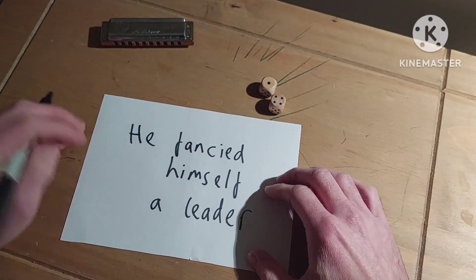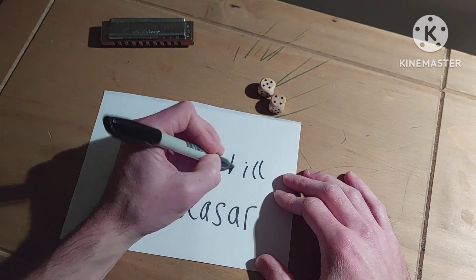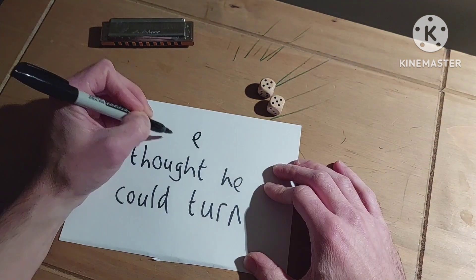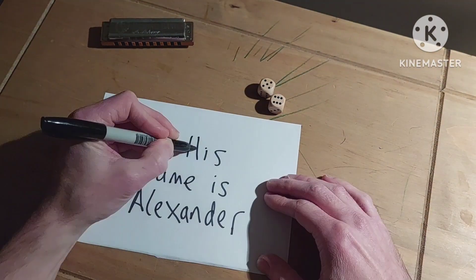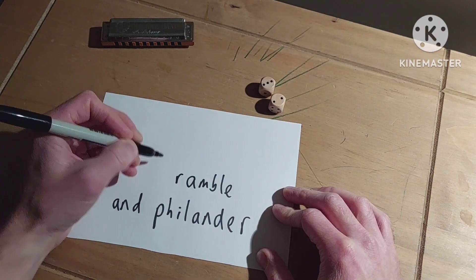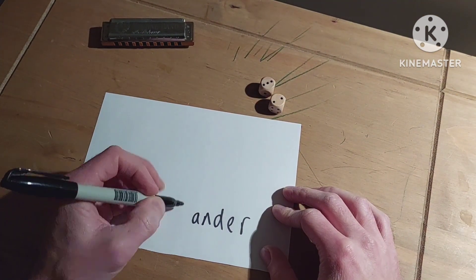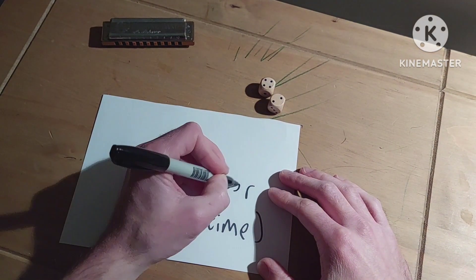He fancied himself a leader, a Churchill or a Caesar, thought he could turn water into wine. His name is Alexander, he'd ramble in Finland. Alexander, the gambler of our time.